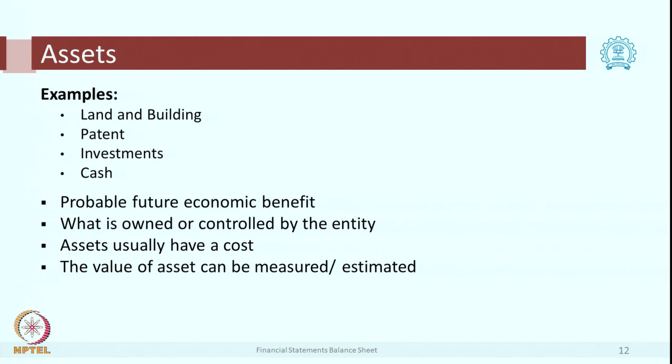We have got land, building, patents, investments, cash and so on. As a definition, something which is a property of the company which has a probable economic value is called an asset, and the second condition is it must be owned or controlled by the entity. We also saw in our earlier sessions that in the business cycle you need human power, you need people to manage the business. They are invaluable assets of the enterprise — their skills are important, how they behave is important.